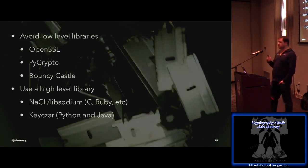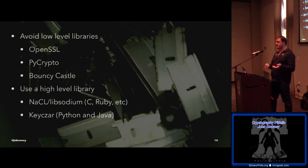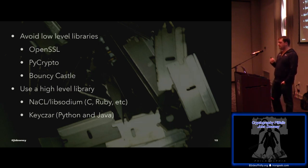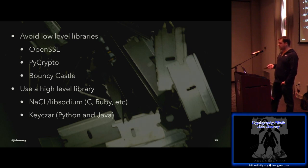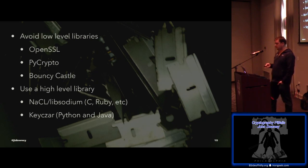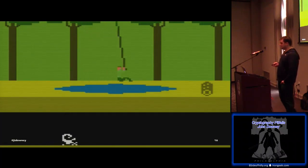I like to talk about avoiding low-level libraries. I liken this to giving developers a bucket of razor blades and asking them to build a saw — you're really bound to hurt yourself if you don't know exactly what you're doing. Low-level libraries like OpenSSL, PyCrypto, and BouncyCastle work at too low a level. They give you basic primitive building blocks and expect you to build something useful. Instead, use a high-level library like NaCl, Libsodium, or Keyczar from Google — you can find these with bindings to every language, so they're really easy to pick up.